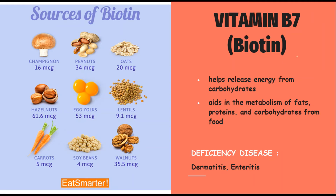Next we have vitamin B7, biotin. It helps release energy from carbohydrates and aids in the metabolism of fats, proteins, and carbohydrates from food. Some sources of biotin are peanuts, oats, hazelnuts, egg yolks, lentils, walnuts, soybeans, and carrots. Deficiency diseases caused due to biotin deficiency include enteritis and dermatitis.